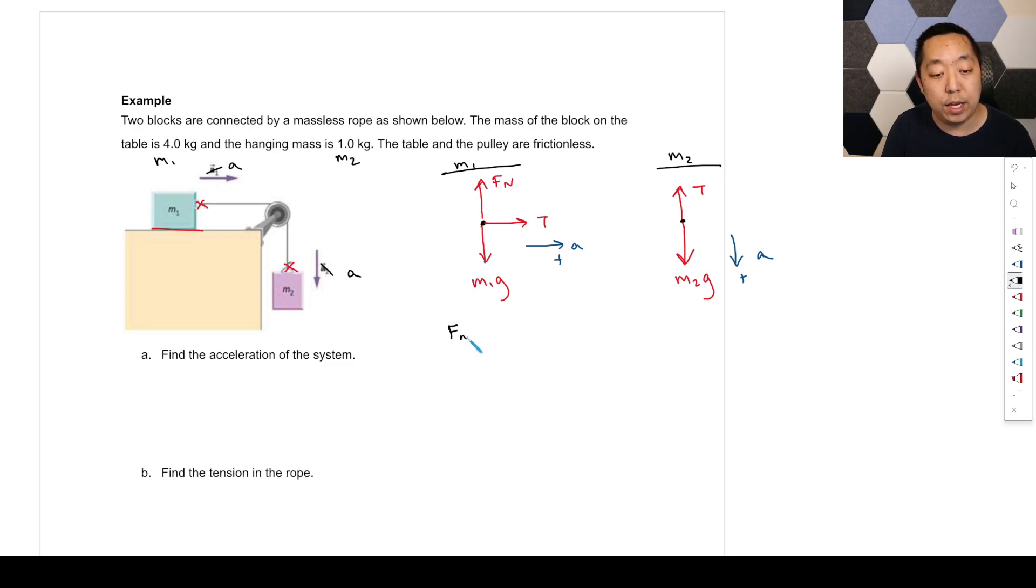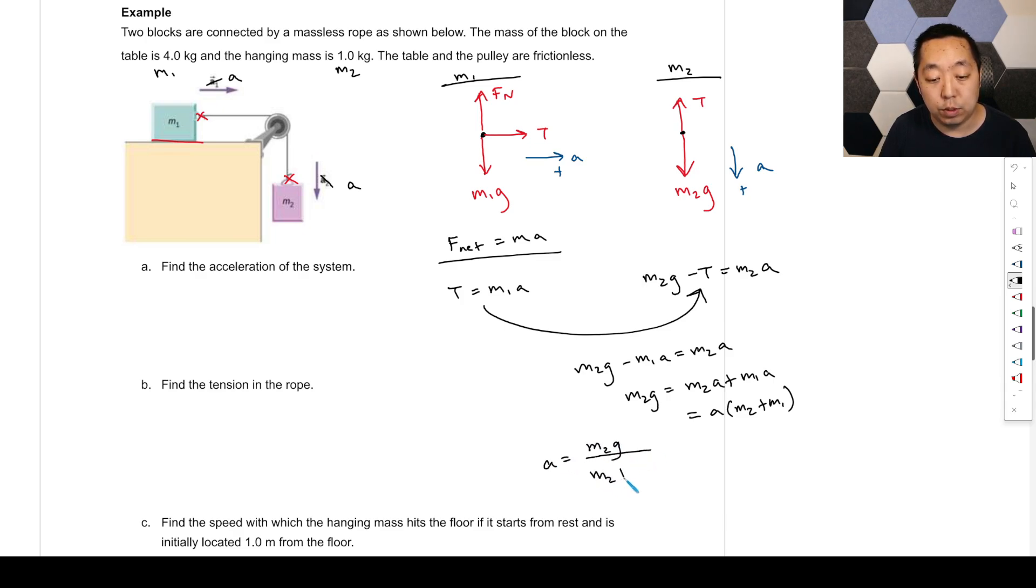And so then when we do F net equals MA, we're going to say to the right is tension, that's equal to M1 times A. It's only x, we'll just do the x forces. The y forces, there's no y acceleration. So we don't really have to worry about that. And then for this guy, because down is the positive direction, we'll have M2g minus T is equal to M2 times A. We can plug that into here, we'll get M2g minus M1a is equal to M2a. Move that over, you get M2g is equal to M2a plus M1a, which is A times M2 plus M1. And so then the acceleration is going to be M2g over M2 plus M1, I just do it in terms of the symbols. You can plug in the numbers if you want. Obviously, M2 would be one, that would be 10 over five, so it's gonna be about two. Find the tension in the rope. Well, it's M1 times A here. So it's gonna be M1 times A, which is literally four times two, so it's gonna be eight Newtons there.